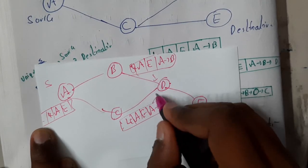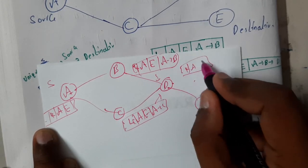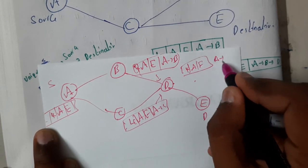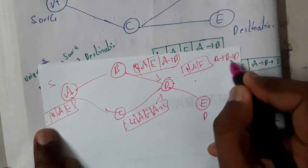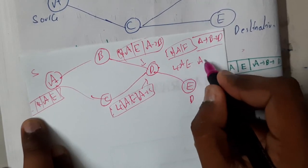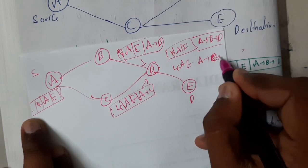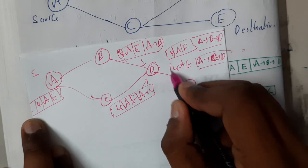To D we can go from here or we can go from here. So there are two possibilities for this. Those are nothing but for A to E: A tends to B tends to D. Similarly, for A to E, A tends to C tends to D.